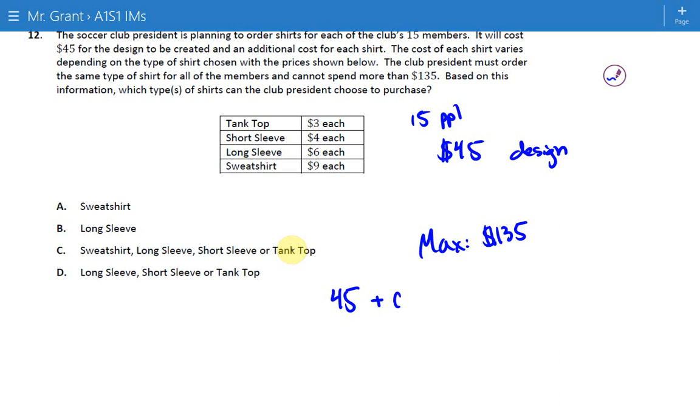Some cost per each shirt. It could be $3 per shirt, $6 per shirt, $9 per shirt. But we need to do this cost times the number of people. So maybe we can think of times 15 people. And when we do that, we cannot exceed $135.